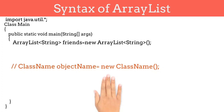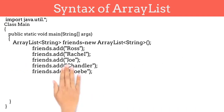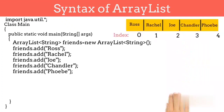Now our ArrayList is ready to add elements. We have to use the add function to add elements. We can pass a name or string to the add function and it will automatically get added to the next index in the ArrayList. So let's add 5 elements in our ArrayList. The 5 strings we want to store are Ross, Rachel, Joy, Chandler, and Phoebe.